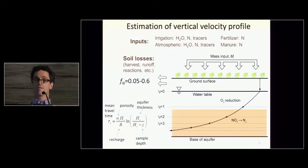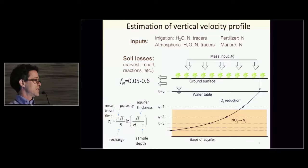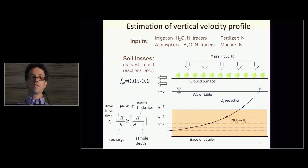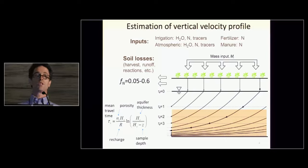There is a generic loss term in the unsaturated zone in soil, which we call a leaching fraction. For nitrate, we typically see leaching fractions of somewhere between 0.05 to 0.6 of the original source mass reaching the water table. The important detail of the equation on the lower left is that this relates the travel time to the depth. As a particle goes down to the water table and then moves down through the aquifer, the vertical velocity decreases exponentially with depth. Since we are assuming lateral homogeneity around the well, you can collapse this 2D problem into a 1D vertical profile.